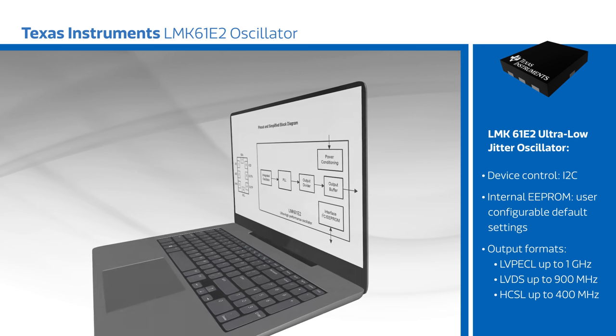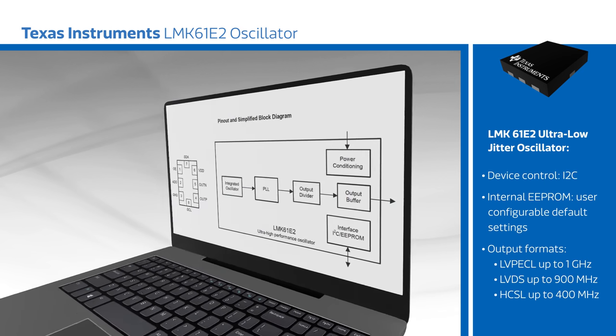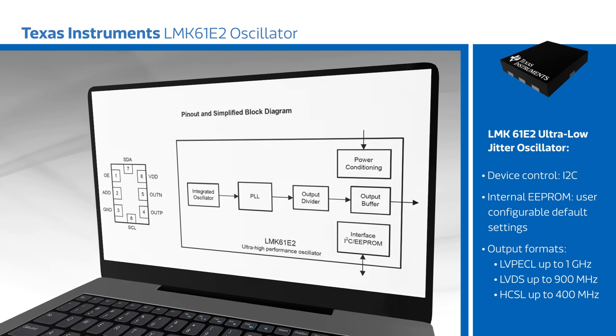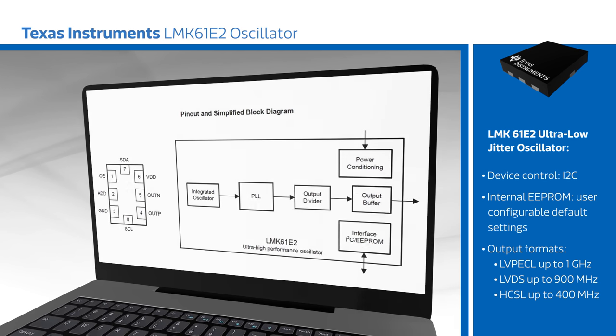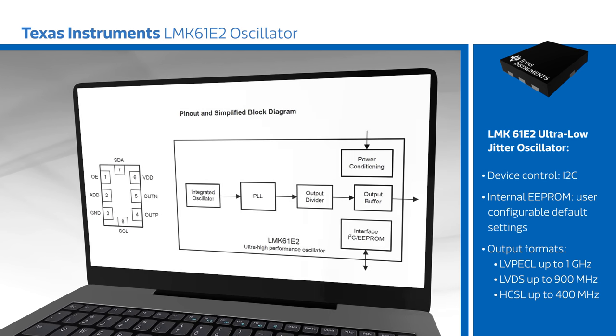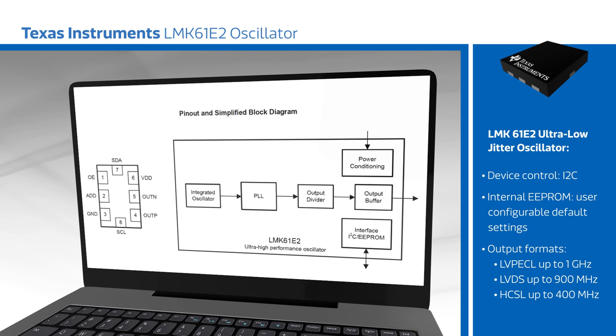The output can be set to LVPECL, LVDS, or HCSL, with a total frequency tolerance of plus or minus 50 parts per million, and supports both coarse and fine frequency margining.